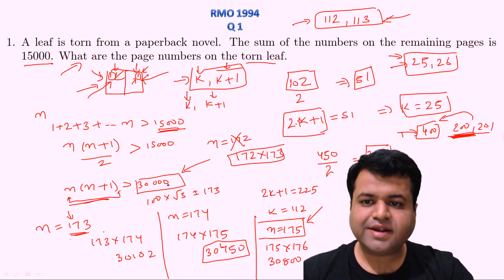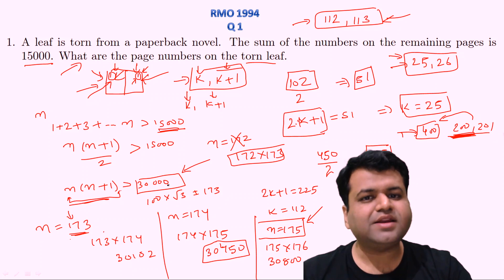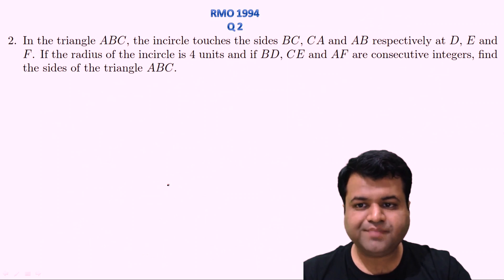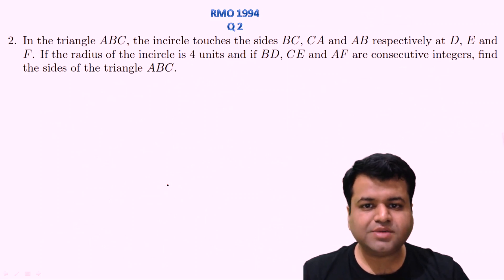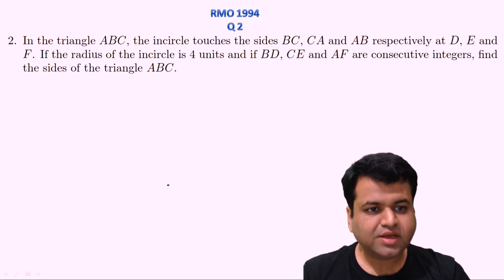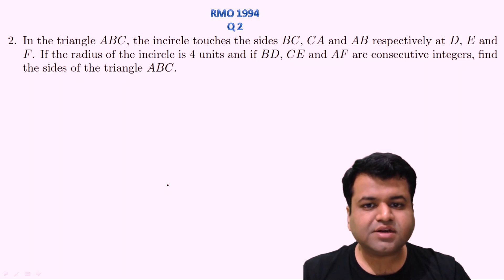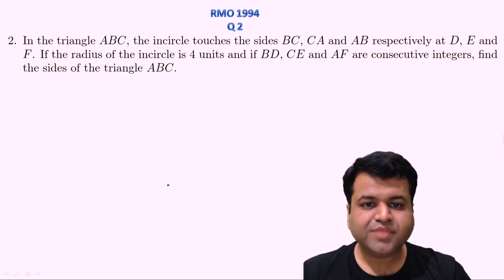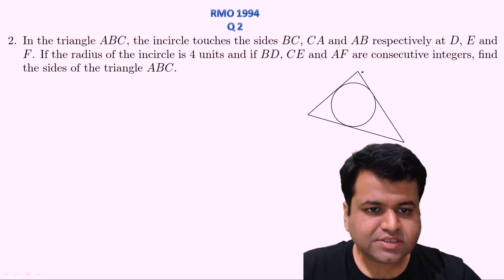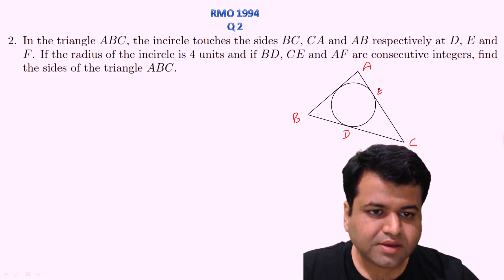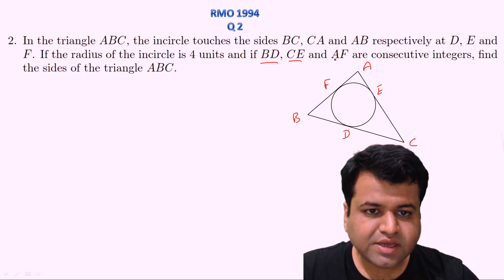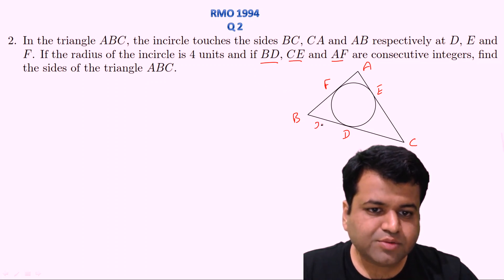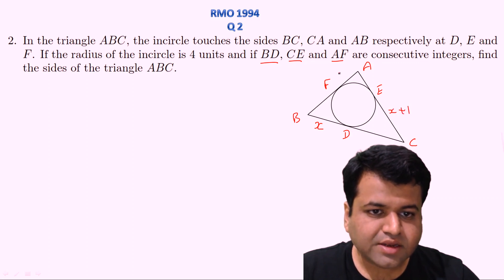That was question one of year 1994. Now let's proceed to question two, which is from geometry. The question states: in triangle ABC, the incircle touches sides BC, CA, and AB at D, E, and F respectively. If the radius of the incircle is 4 units and BD, CE, and AF are consecutive integers, find the sides of the triangle. Let's draw the figure. Let BD = X, then CE = X+1, and AF = X+2.